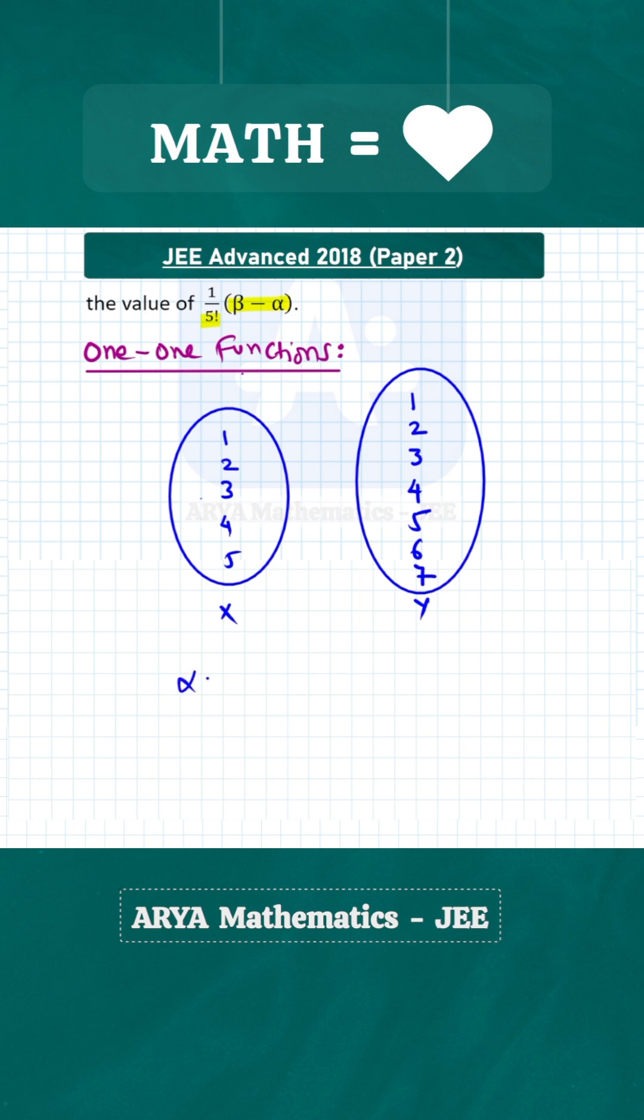So α, which is the number of one-to-one functions, will be 7C5. 7C5 is the number of ways of selecting any 5 elements from the 7 elements of set Y, and the number of ways of connecting those 5 elements with the 5 elements of set X is 5 factorial.